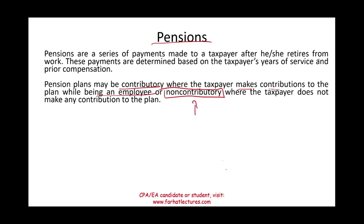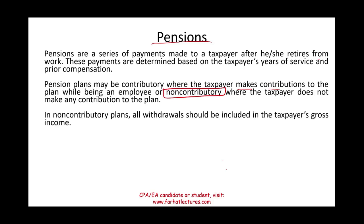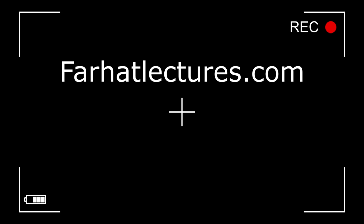Non-contributory means you as an employee invest zero dollars — your employer contributes all the money, so it's free to you. A contributory plan means the company pays an amount and you also have an amount deducted from your paycheck. Most pension plans today, if they still exist, are contributory because non-contributory plans are more expensive for the company. For a non-contributory plan, all withdrawals upon retirement must be included in gross income, because you have nothing invested — everything you receive is taxable income.